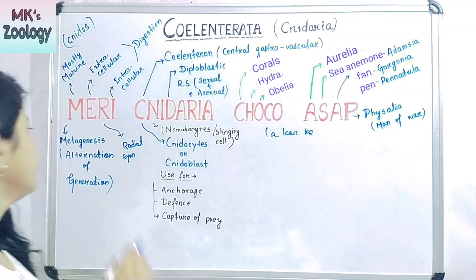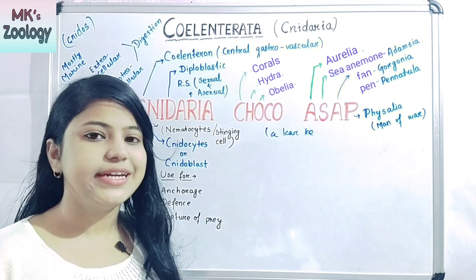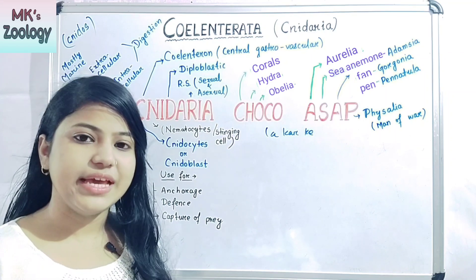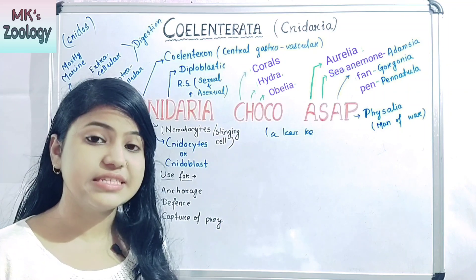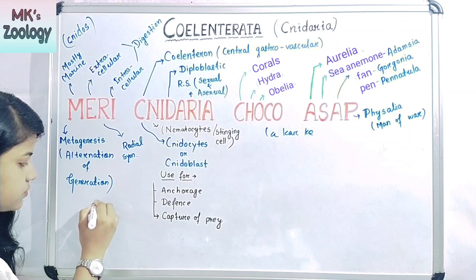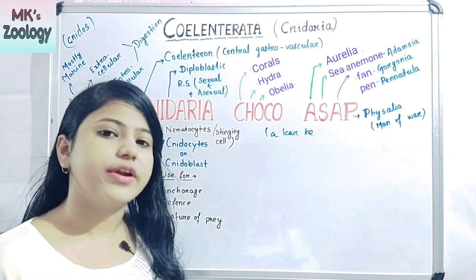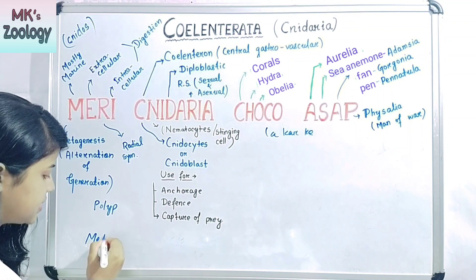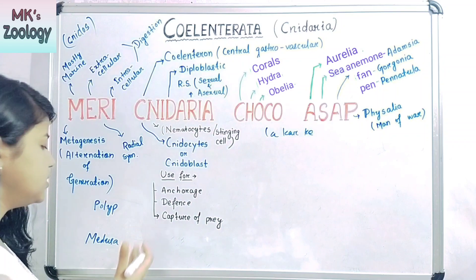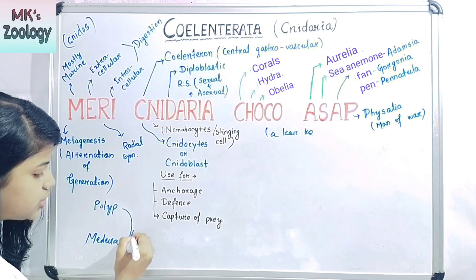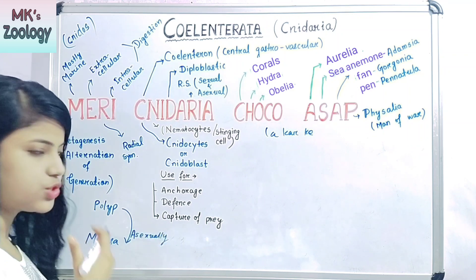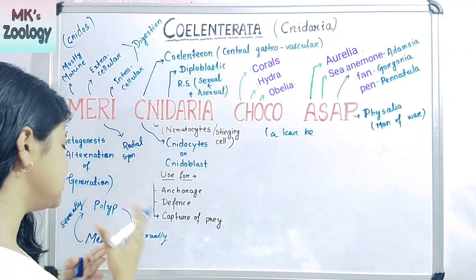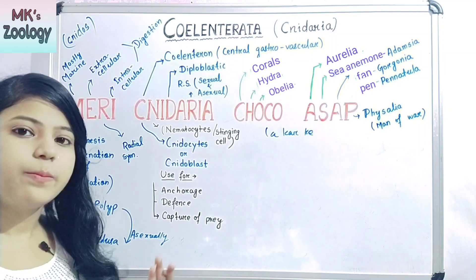The next letter N stands for metagenesis, otherwise known as alternation of generation. This means both asexual and sexual stages are seen in a single individual — there are two body forms. The first is the polyp and the second is the medusa. The polyp asexually forms the medusa, and the medusa sexually forms the polyp. This alternation of polyp and medusa is called metagenesis.